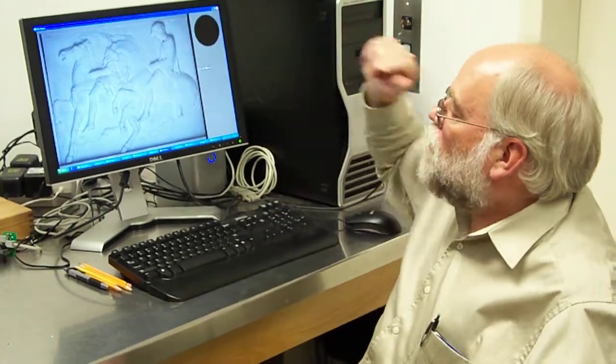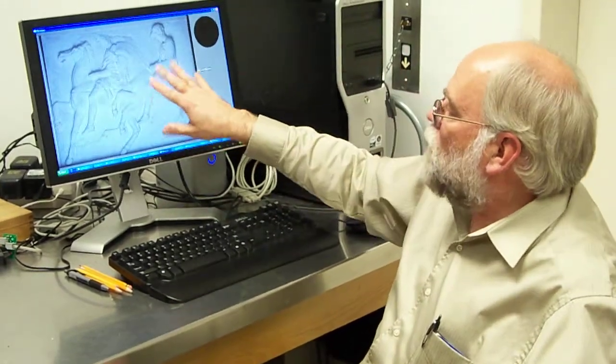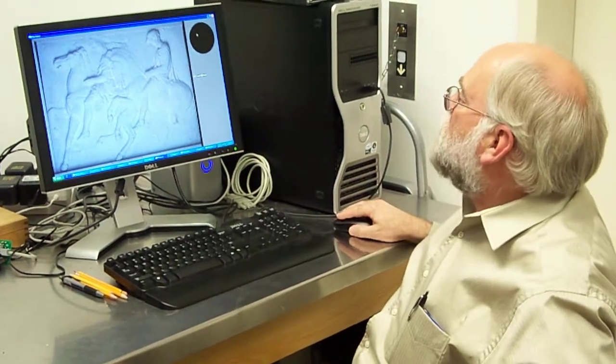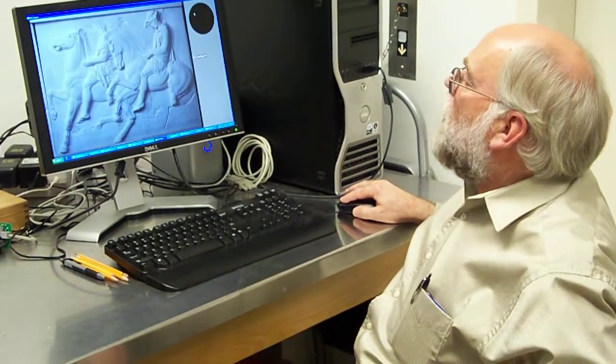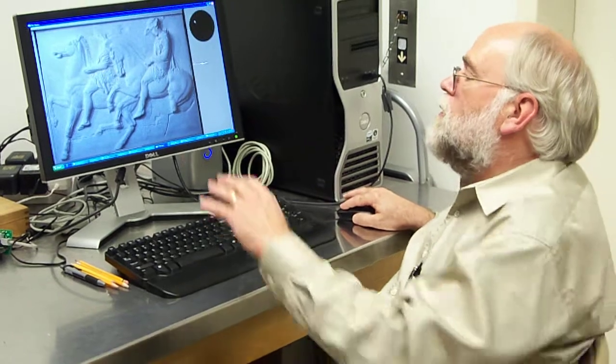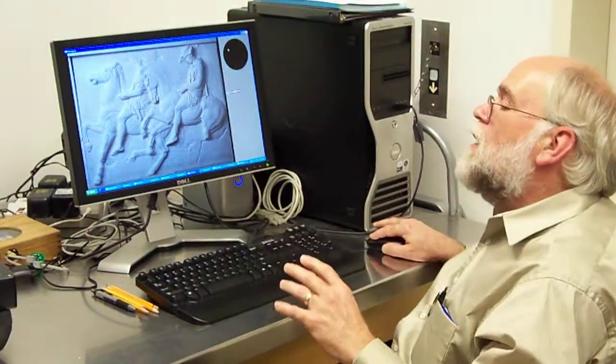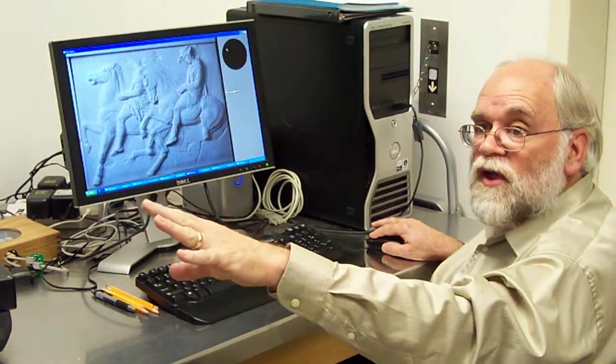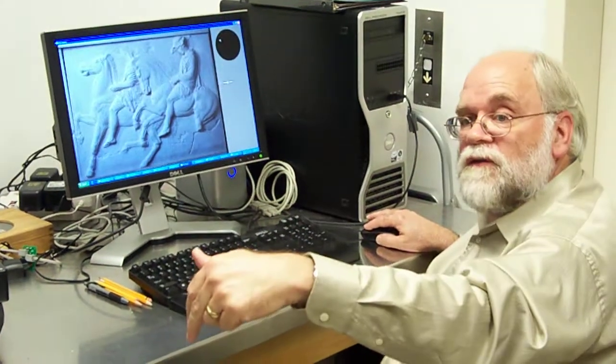So here is one of the Parthenon frieze panels. And all of a sudden, here you can see things that you don't see actually even looking at it downstairs, because it's got a fixed light source there.